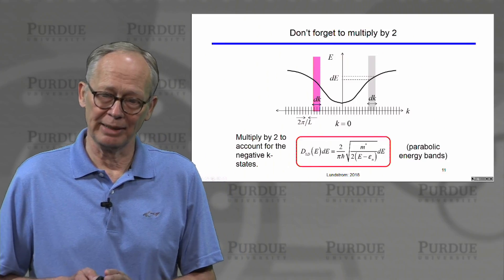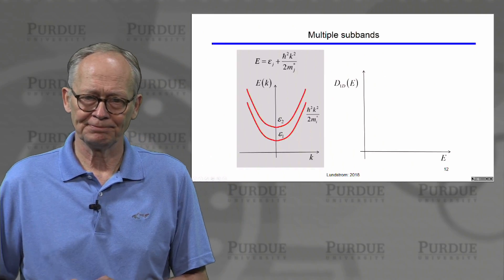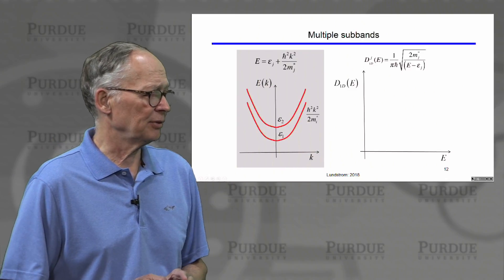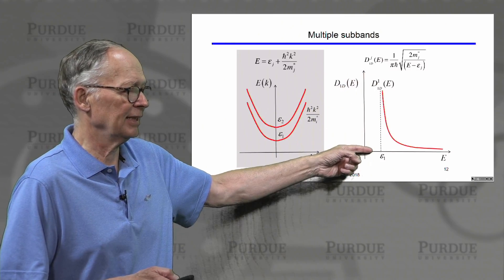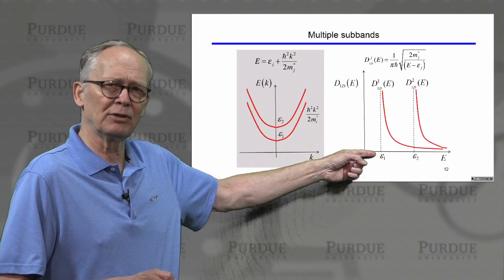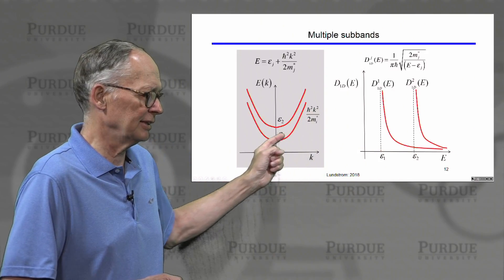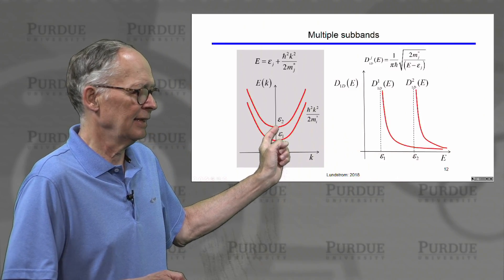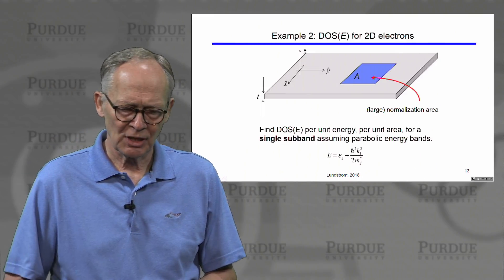For each subband — first, second, third, and so on — we have a density of states associated with electrons in that subband. The density of states diverges at the bottom of each quantized level. That's 1D. Now let's do it for two-dimensional electrons, which we can produce with artificial semiconductor structures or in two-dimensional materials of current interest.